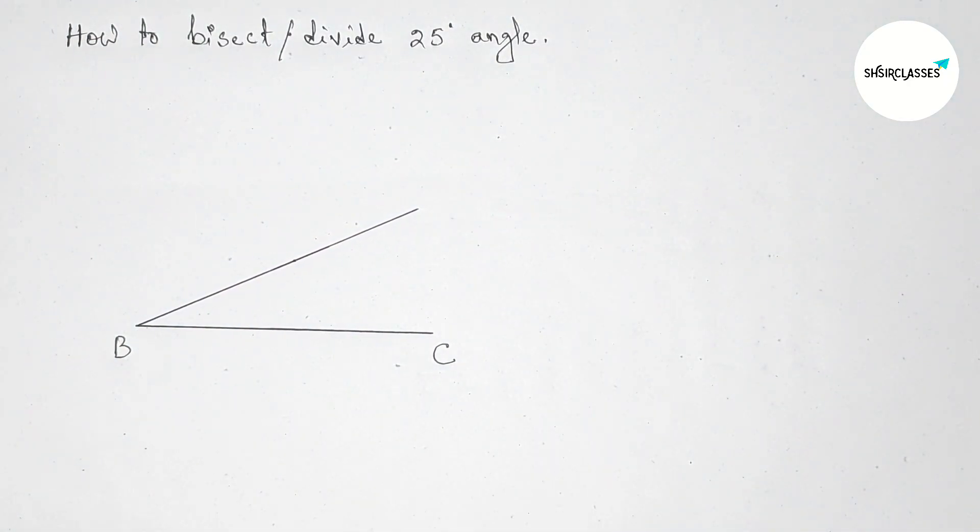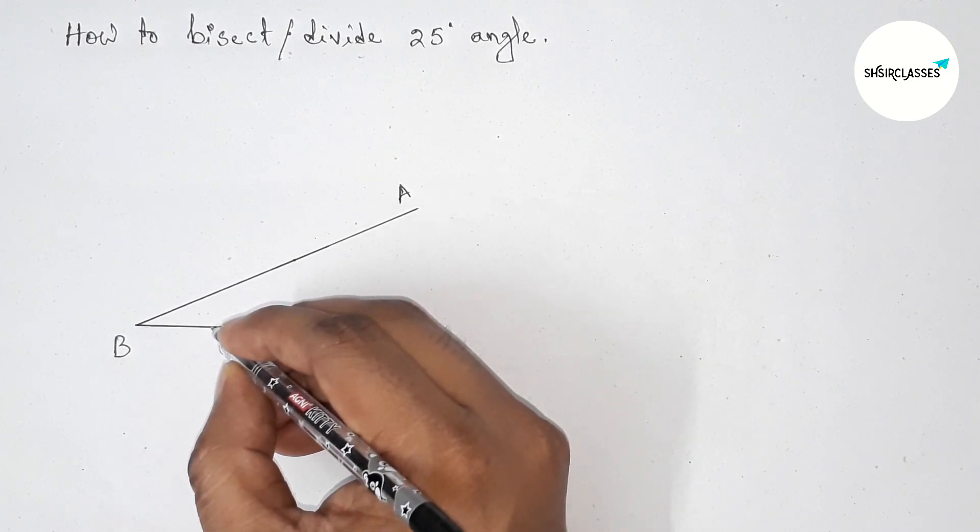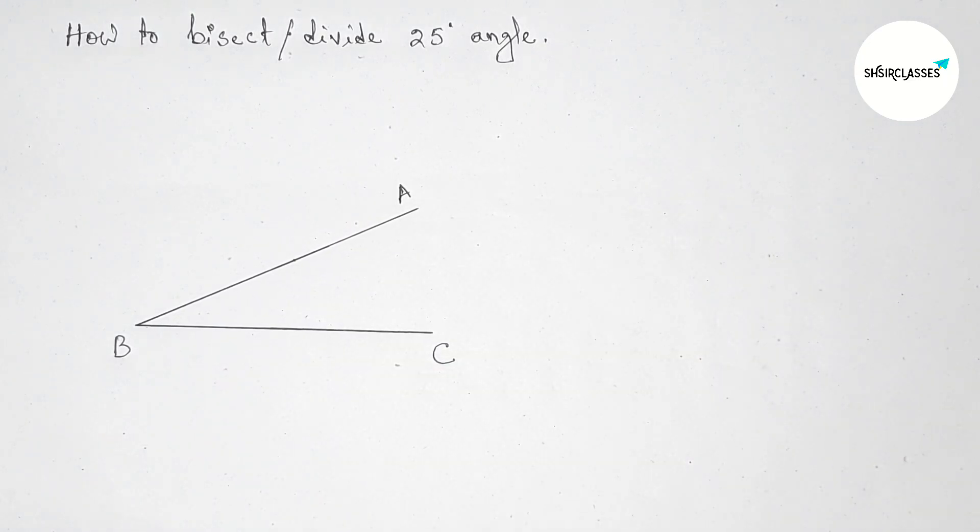Next, joining this line to get 25 degree angle, and now taking here point A. So angle ABC is 25 degrees.